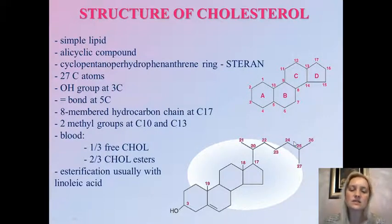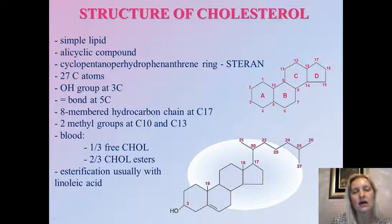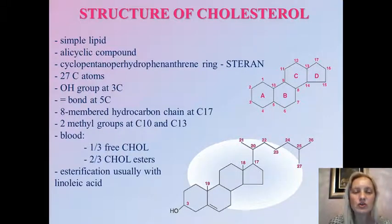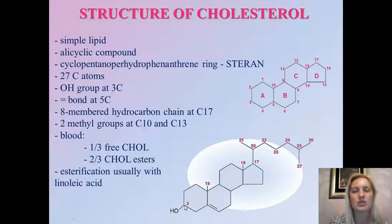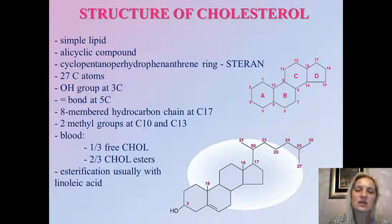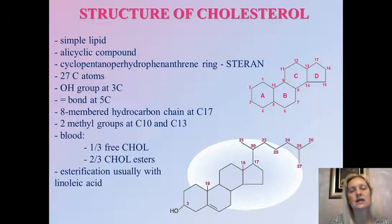This is the structure of free cholesterol. In our blood, approximately one-third of cholesterol is found in its free form, but two-thirds is found as cholesterol esters, where the OH group at position number three is esterified with fatty acids. Esterification is usually accomplished with linoleic acid, though some other fatty acids may also be found in cholesterol esters.